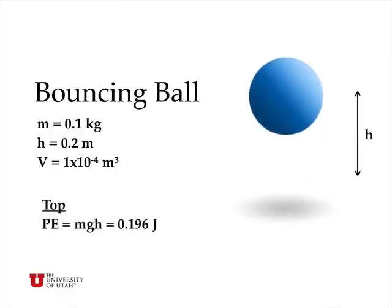Now, at the top of its trajectory, this ball has gravitational potential energy. Its velocity, at least instantaneously, is zero, and so we can calculate the amount of gravitational energy it has at the top of its trajectory by taking the mass times the gravitational acceleration times the height, and all that multiplied together is 0.196 joules. That's the total amount of gravitational energy the ball has at the very top.